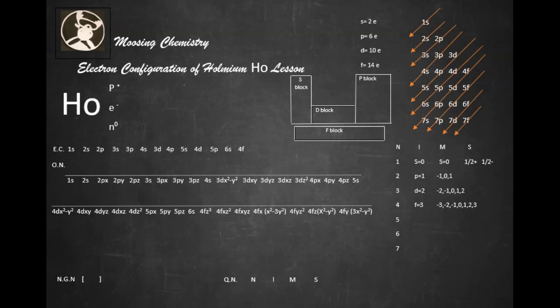Alright, well HO happens to be element number 67. Put that down for the atomic number. And its atomic mass number, the AMU, is going to be 165. So that means we have 67 protons, 67 electrons, and we take 165 minus 67, and that will give us 98 neutrons.